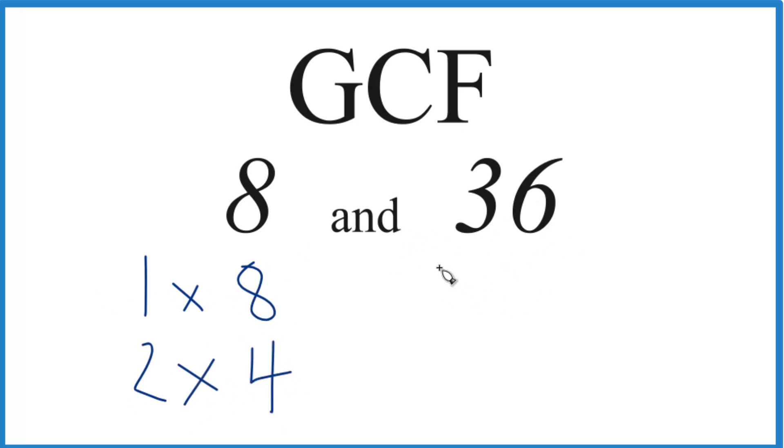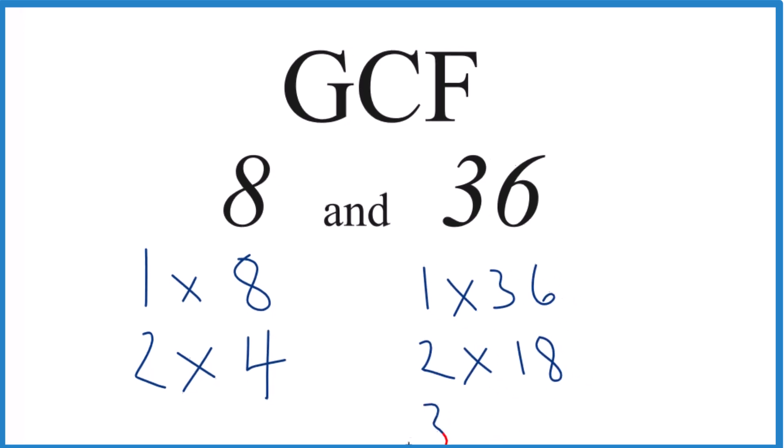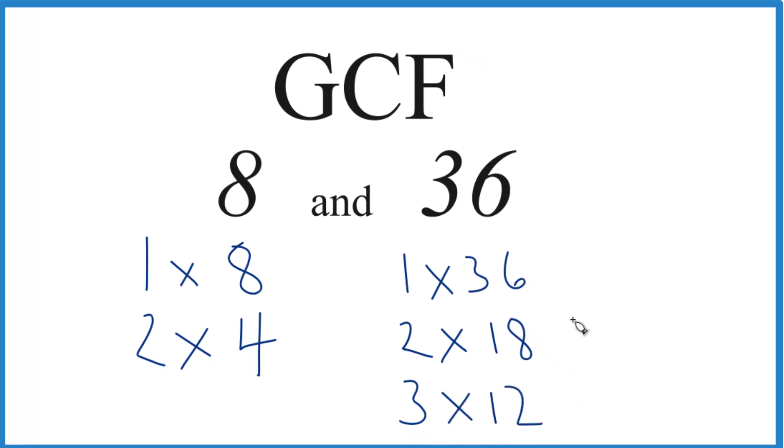For 36, we have 1 times 36, 2 times 18, 3 times 12 equals 36. Let's go over here. 4 times 9 and 6 times 6. All of these things equal 36. These are our factors.